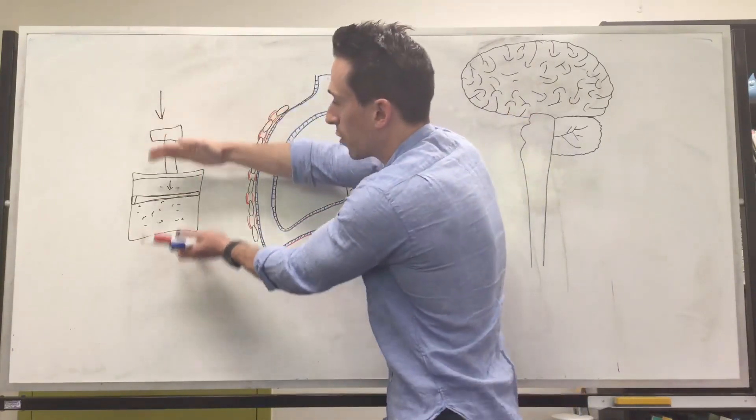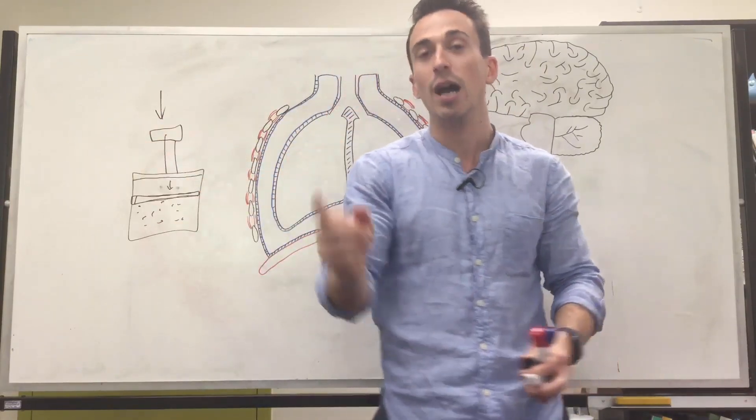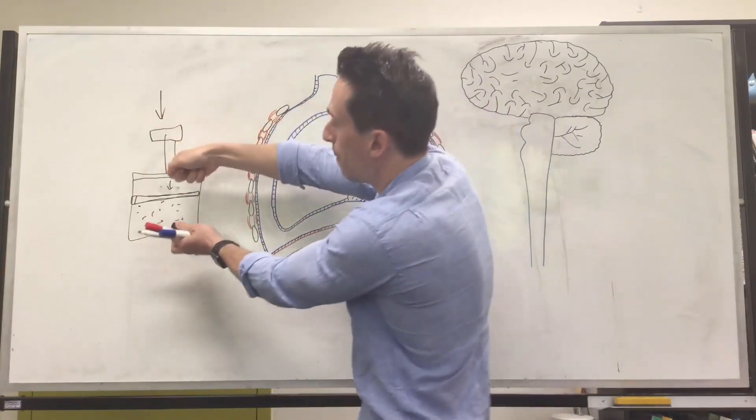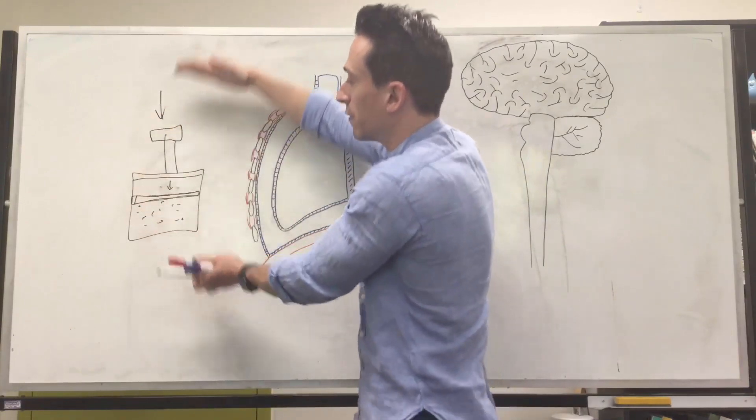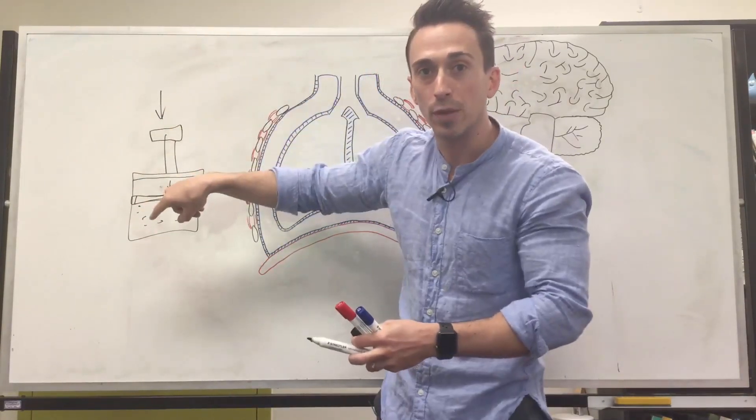Therefore, if you decrease the volume of a container, you increase the pressure and vice versa. If I were to pull back on that piston, increase the volume, the pressure inside becomes lower.